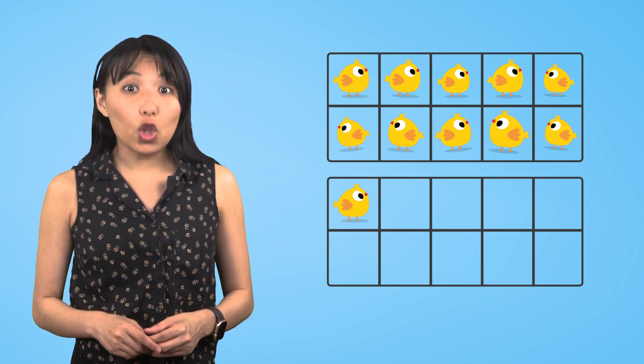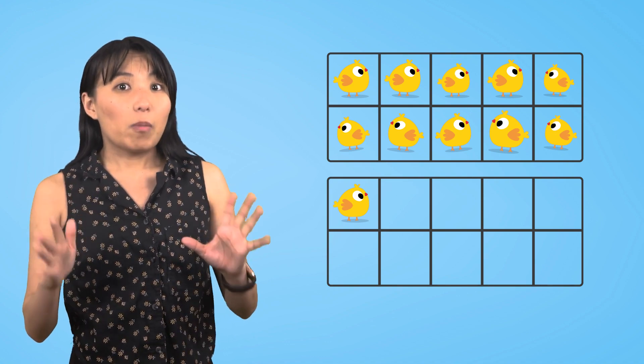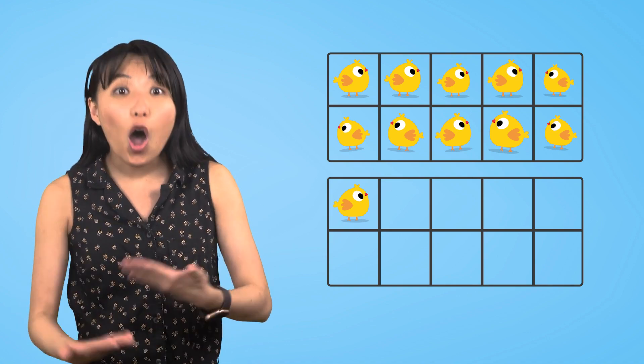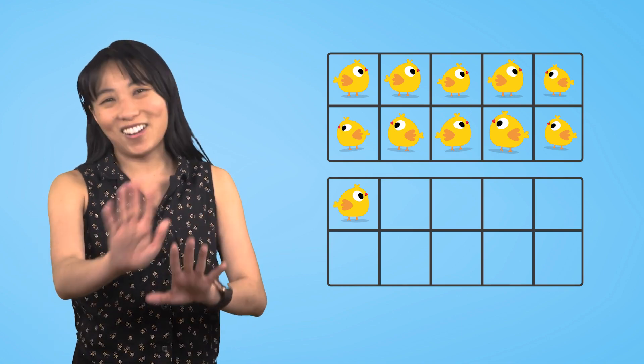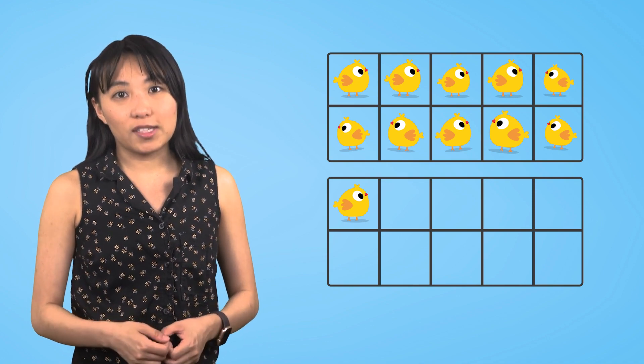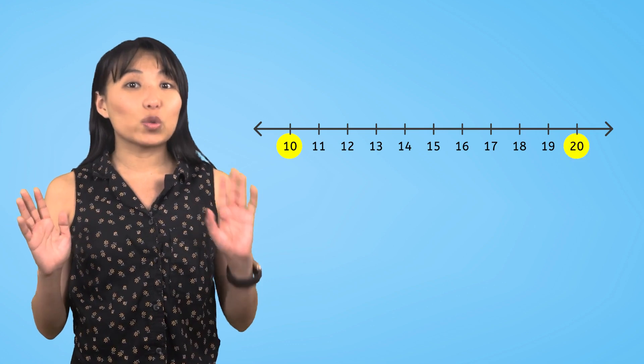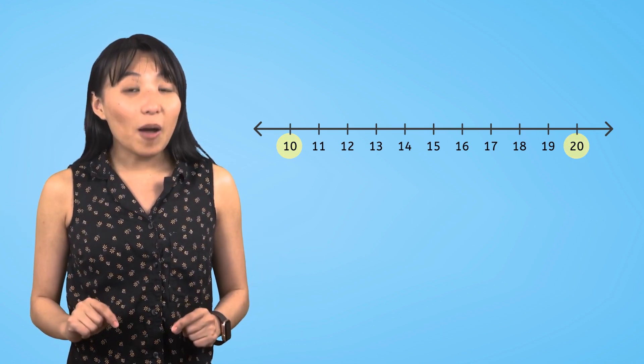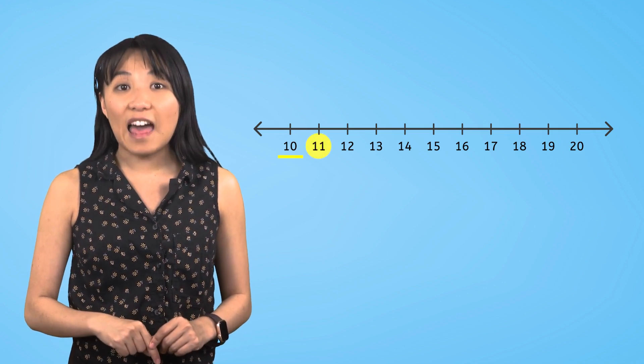We've had a lot of practice with the numbers 1 to 10, but there are so many numbers that come after that! Don't worry! We aren't going to learn all of the numbers today! Just the teen numbers, or the numbers between 10 and 20! The number that comes after 10 is 11!